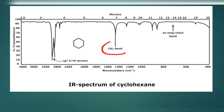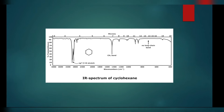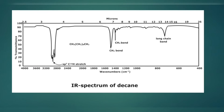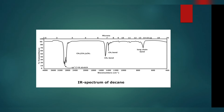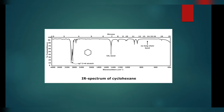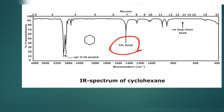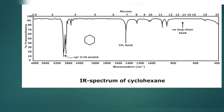This peak here indicates that there is a CH2 band and there is no CH3 band. Comparing with the last example, in decane we had two peaks — one for CH2 and one for CH3. But in this new example, we only have one peak for CH2, and there is no long chain representation. This means our molecule contains only CH2 and all C-H bonds are sp3 hybridized, indicating the compound is cyclohexane.